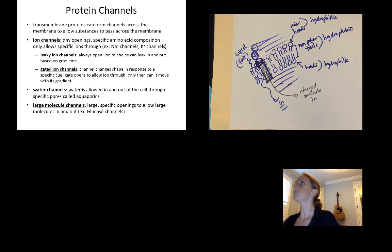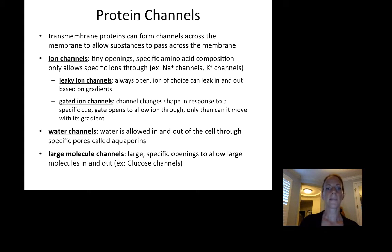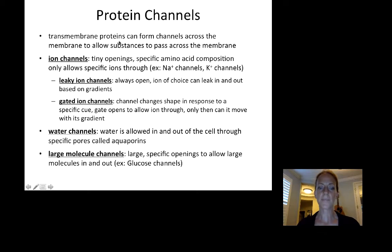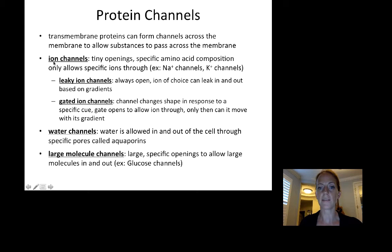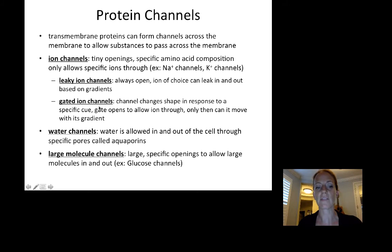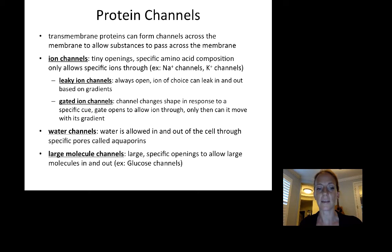The only way a charged molecule can get into the cell is if we open a door for it through a protein channel spanning across the membrane — it becomes a passageway for the charged molecule to get in. These transmembrane proteins can allow substances that wouldn't normally cross to pass across the membrane. Some examples are ion channels — ions have positive and negative charge, and these channels can allow certain ions through, like sodium or potassium. Sometimes gates are open all the time, making them leaky ion channels. More commonly, a signal — electrical or chemical — is needed to open the gate and allow the ion through.